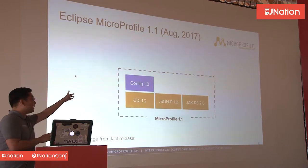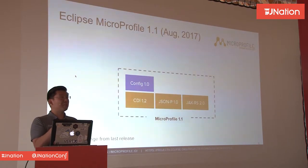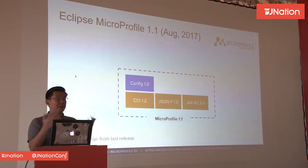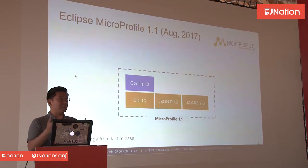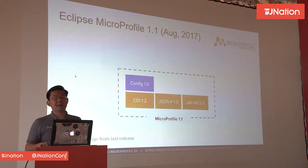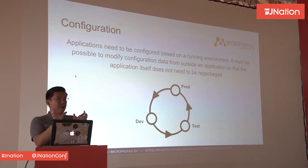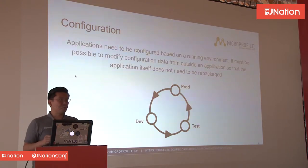Version 1.1 added the Config specification in August 2017. It wasn't an engineering problem — it was a problem of defining the process: where to file issues, where source code lives, who validates the specification. They took time to establish the process, then used it to create this specification. The Config API lets you provide runtime properties like a JDBC URL to your application, so you can have different URLs for production, development, and testing.